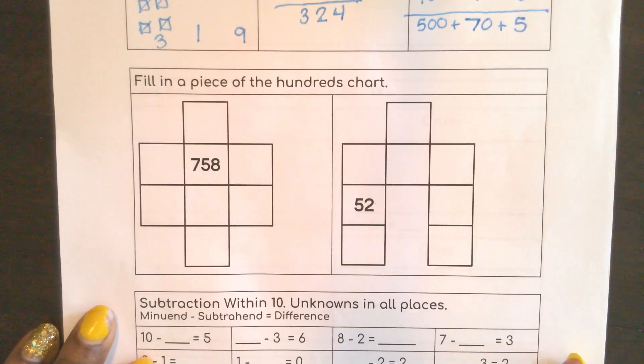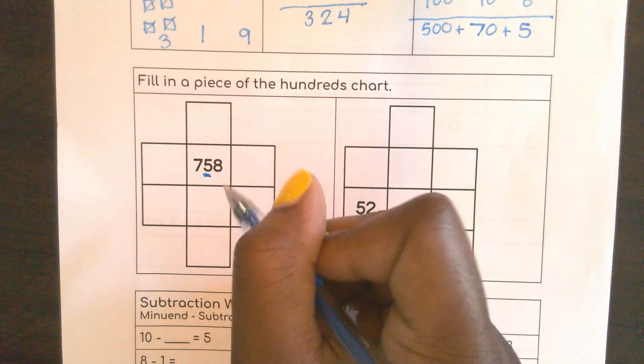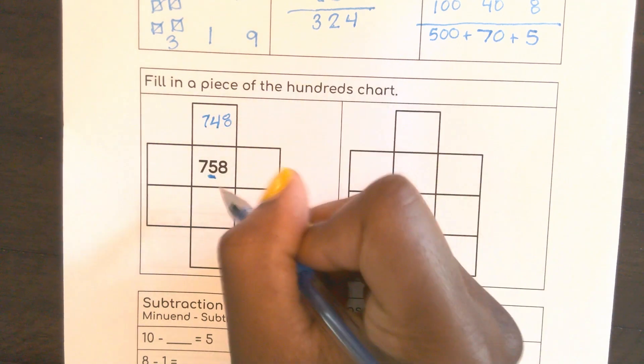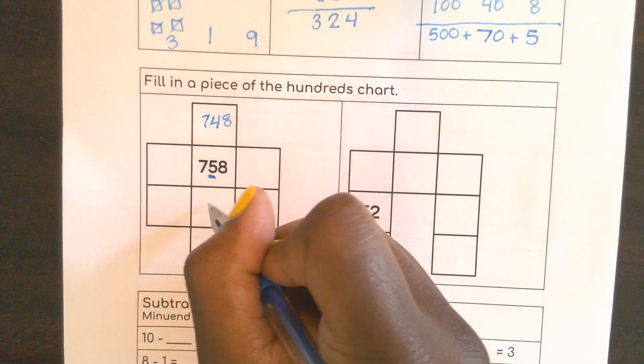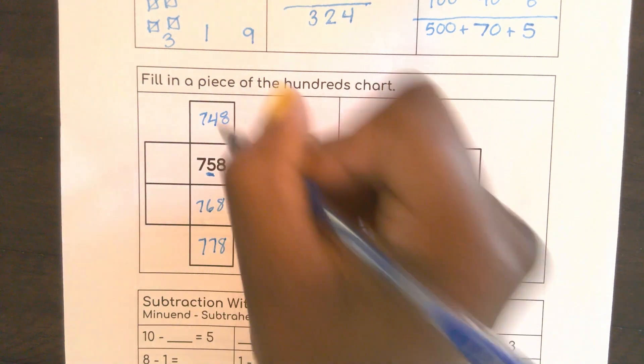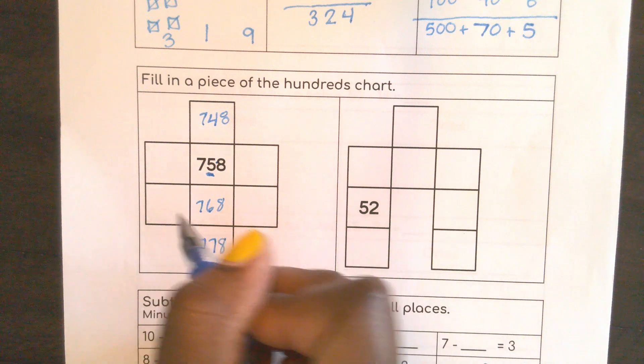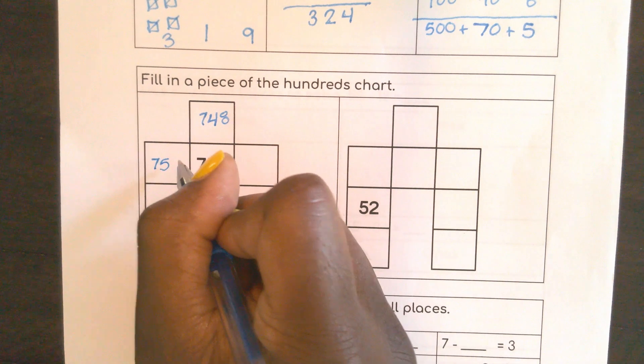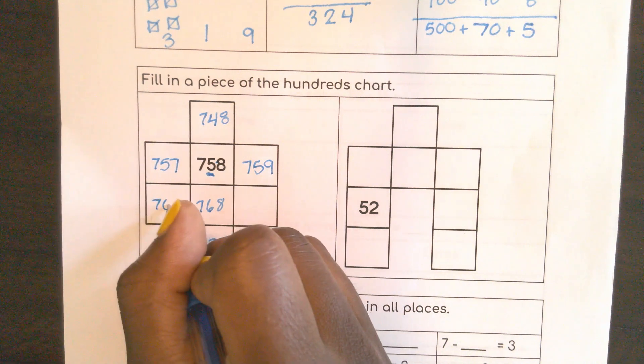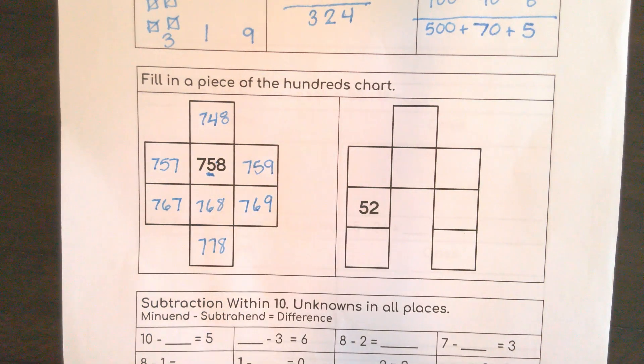Here we are filling in a piece of a hundreds chart. On a Monday I wanted to make our Math-matic Monday fun. So here, remember, up and down it's my tens place, so I'm subtracting going up here: 748, adding going down, so that was 40, 50, 768, 778. So you should see that your tens place is changing: 40, 50, 60, 70. Now left to right, remember it's our ones place: 757, 759, 767, 769.